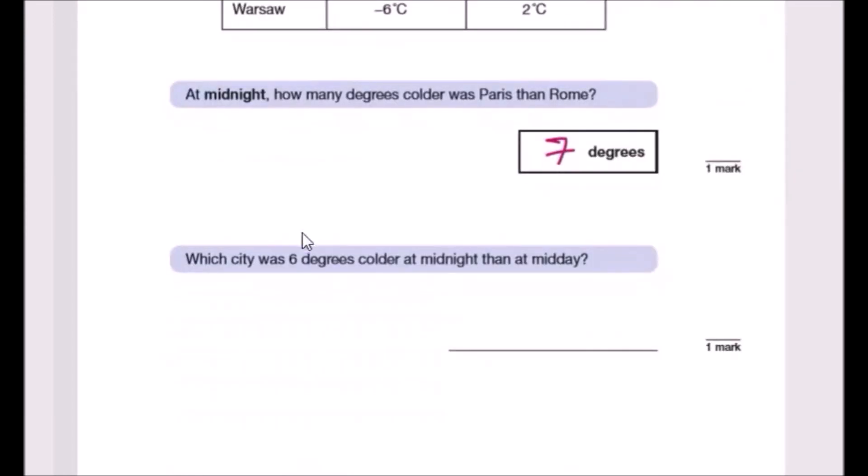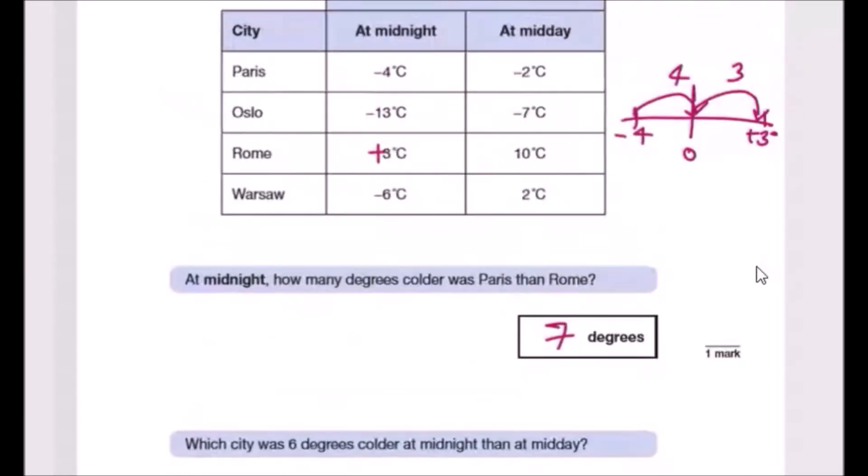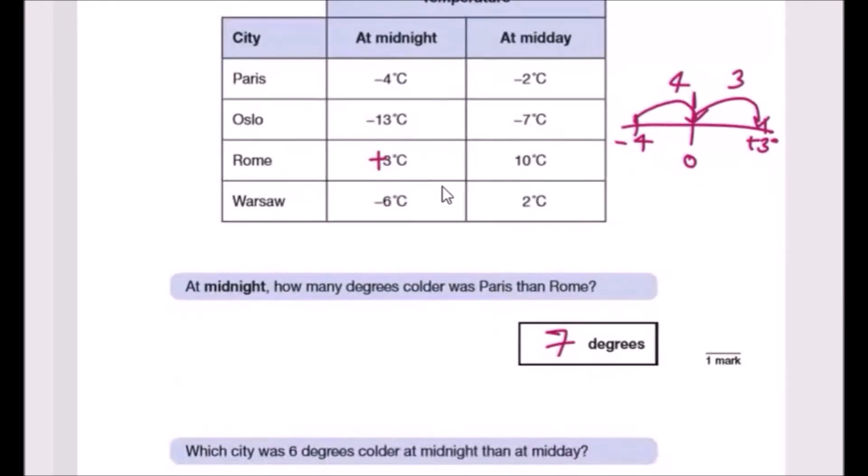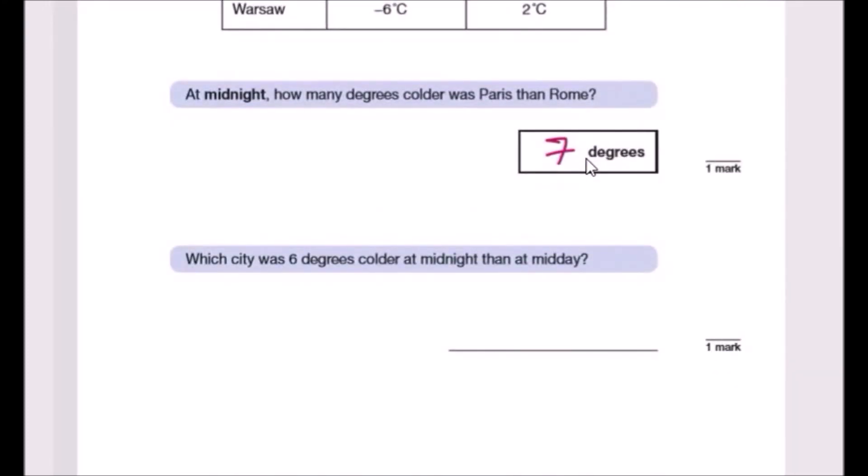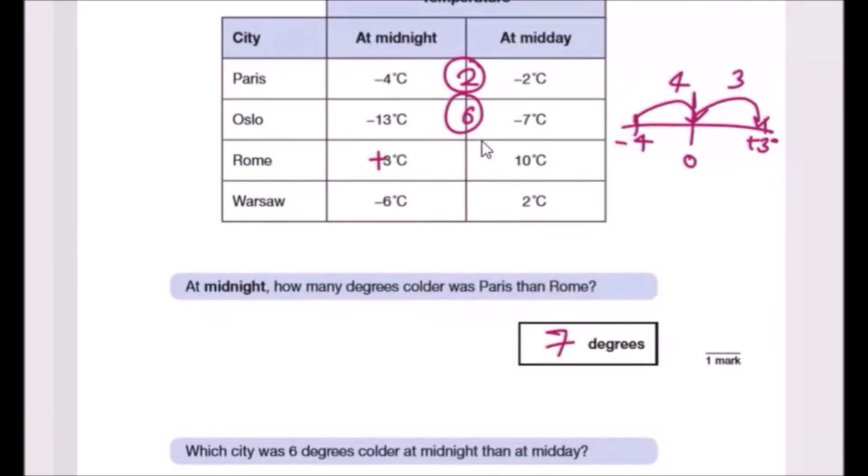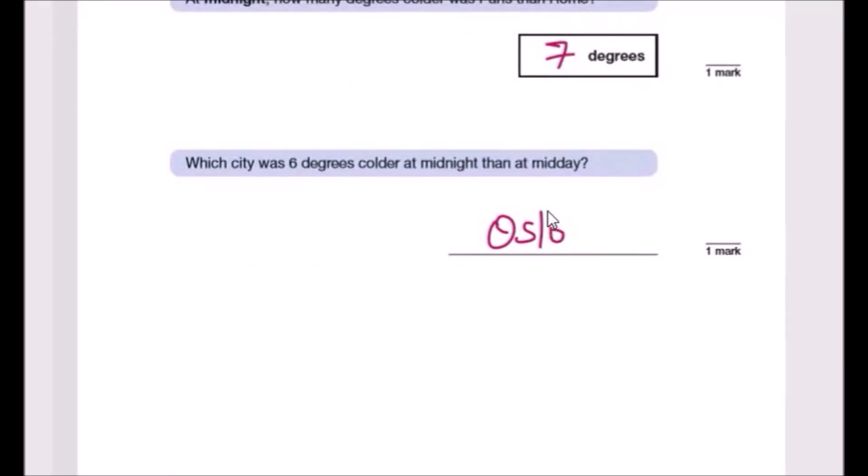Okay, now next one. Which city was six degrees colder at midnight than at midday? So we're looking at the difference of six degrees. So just looking at it carefully, this is quick math. I would ignore the negative sign sometimes. So we've got minus four, minus two, so the difference is of course two degrees. We've got minus 13 and seven, so seven and thirteen has a difference of six. So without looking at the rest, it's definitely going to be Oslo. That's it. So always do your calculations step by step. I mean, you can always check the rest, but this for sure has to be right.